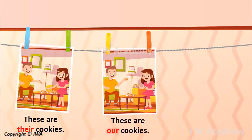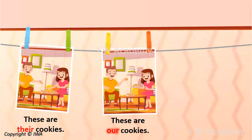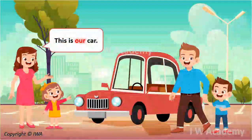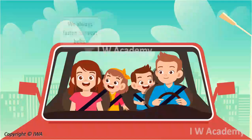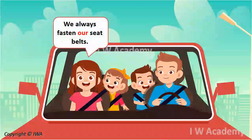These are our cookies. She used the word 'our' to refer to something that belongs to more than one person, including the speaker. Here are more examples. This is our car. We always fasten our seat belts.